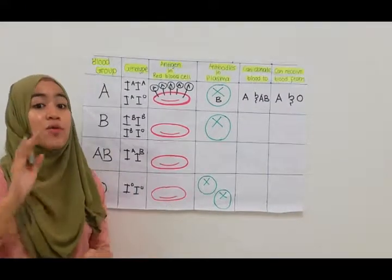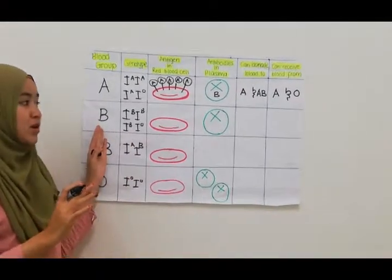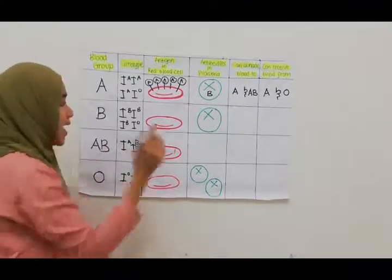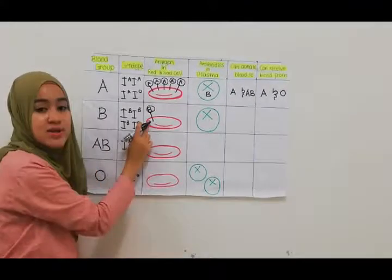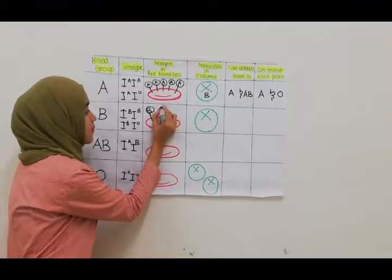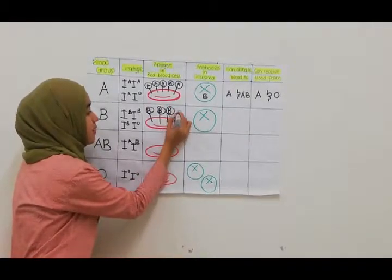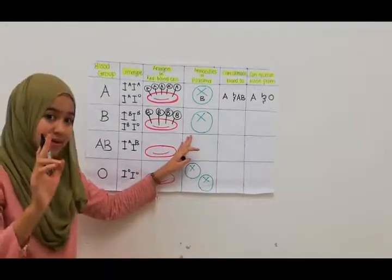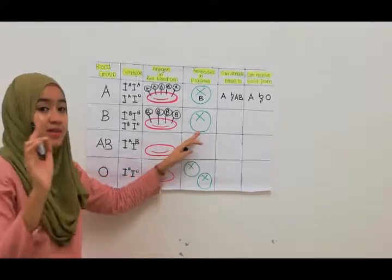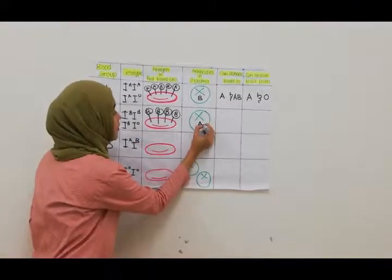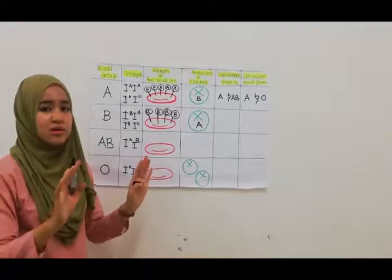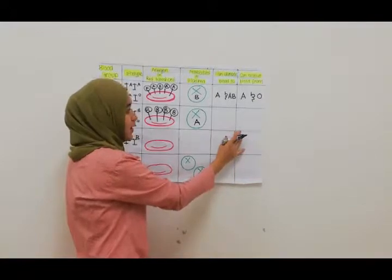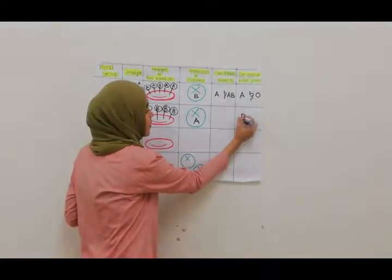Okay, get it? We proceed with blood group B. Same as blood group A, blood group B will have antigen B at the surface of the red blood cell. And they will have anti-A antibody in their blood plasma. Which means blood group B could not receive blood from group A. So it can only receive blood from B and O.